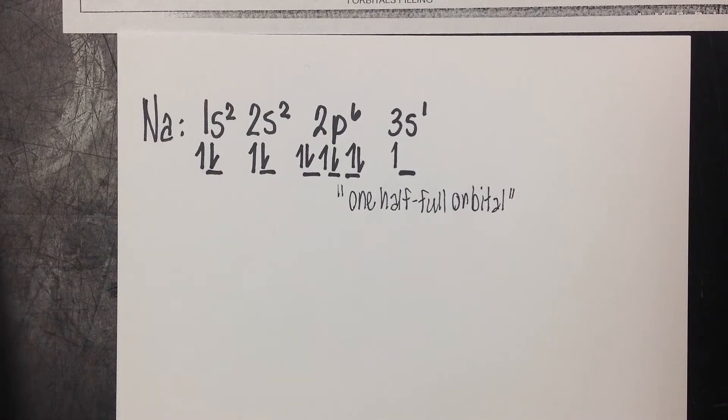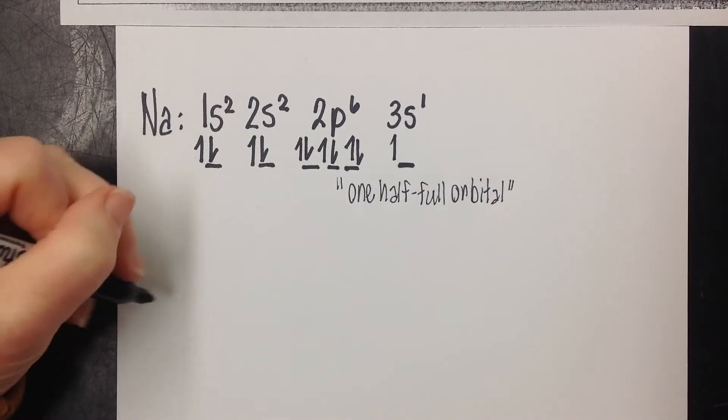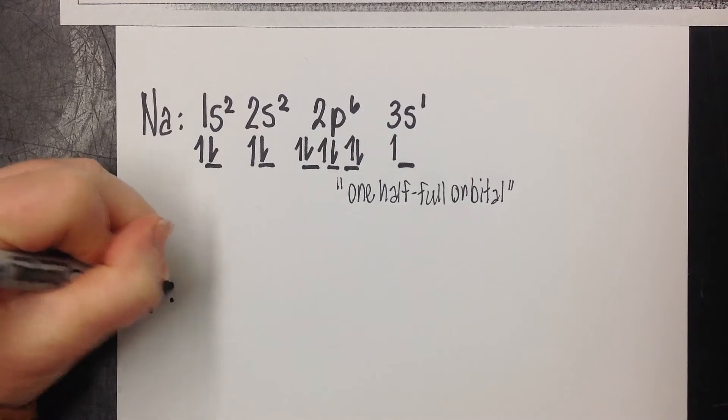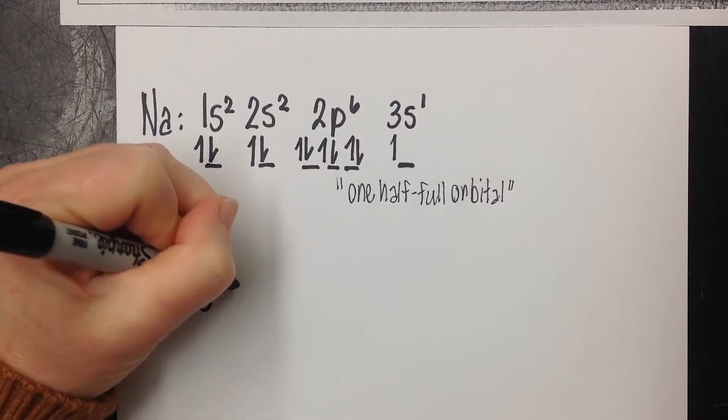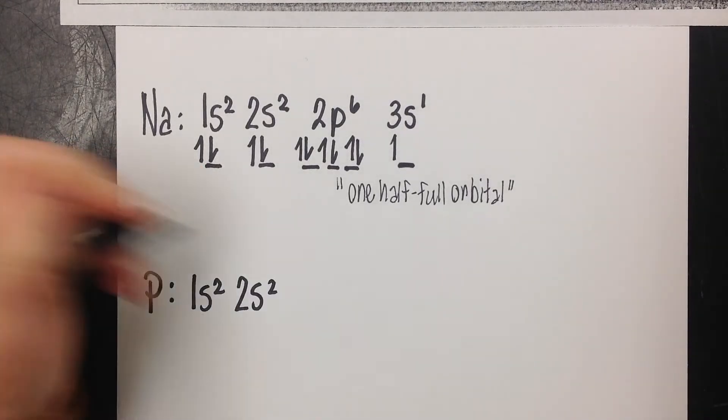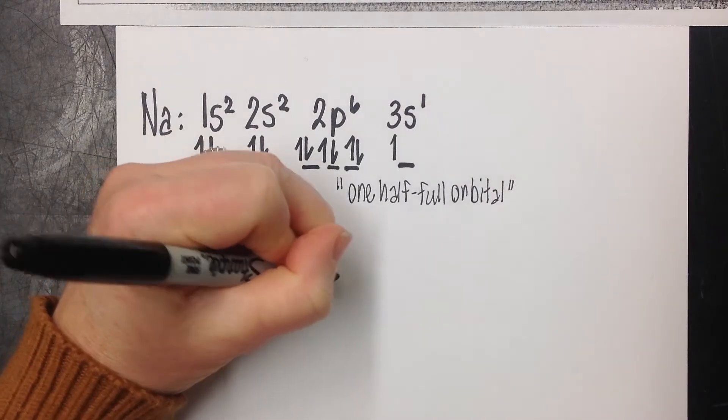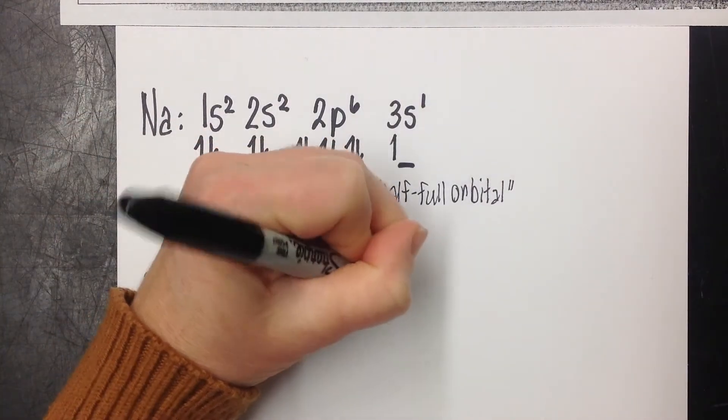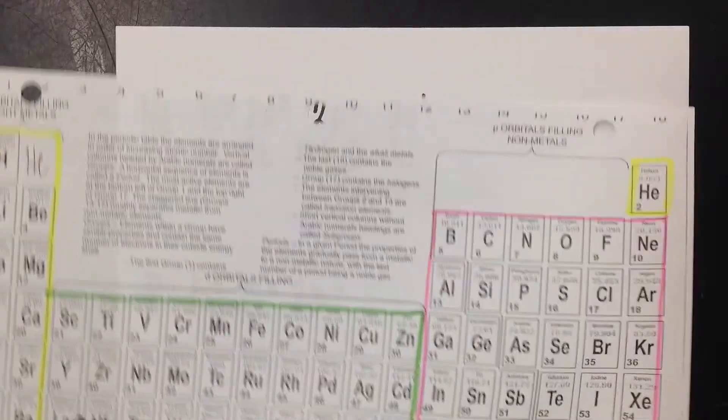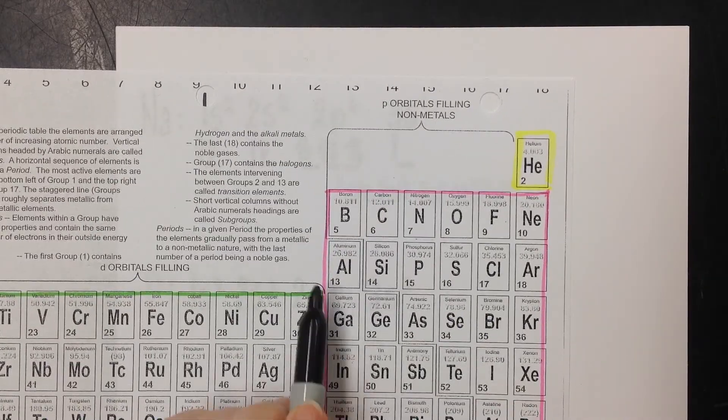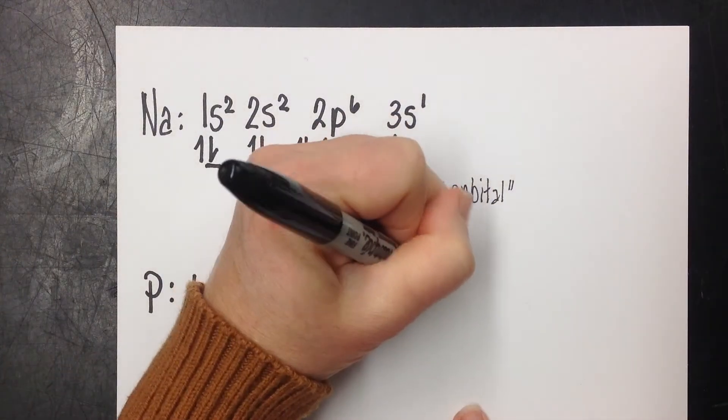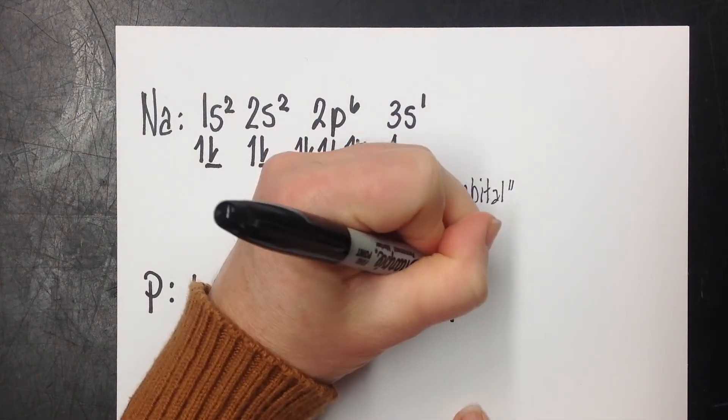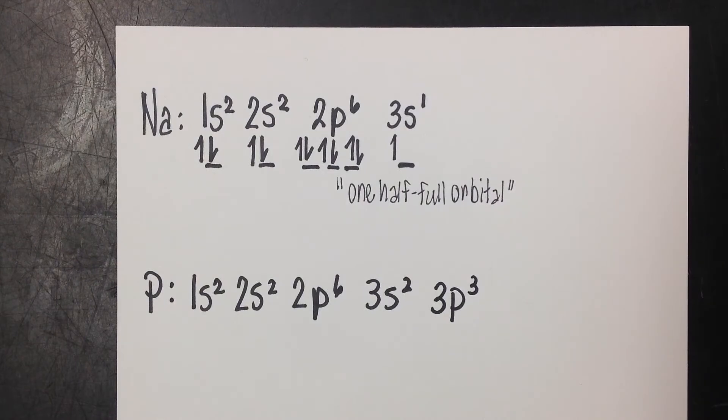Let's do another one. Let's take a look at phosphorus. So the first thing we're going to do is write the electron configuration, which is 1s2, 2s2, 2p6, 3s2. And now we're getting to the block and the row that is occupied by phosphorus. That's going to be 3p, 1-2-3. It's the third one over in the p block on the third row. So 3p3.